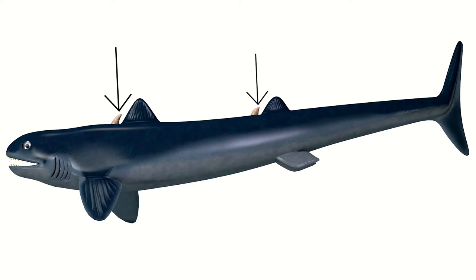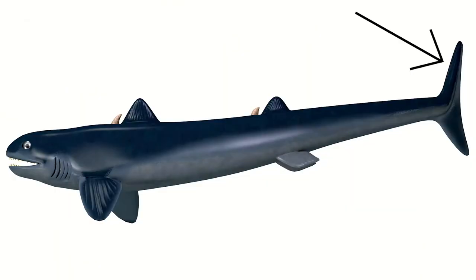It had dorsal fin spines, which is not a common feature for modern day sharks, but there are modern day sharks — the heterodontiforms — which do possess dorsal fin spines as well. And finally, it had a crescent-shaped tail, very familiar to us when we look at our modern day sharks. So this was our first ever shark, existing over 400 million years ago, surviving until about 330 million years ago.